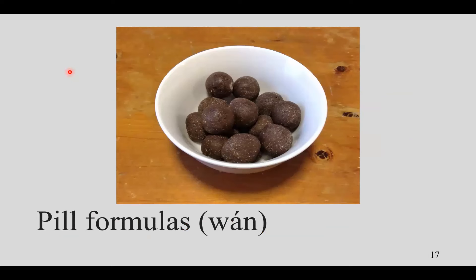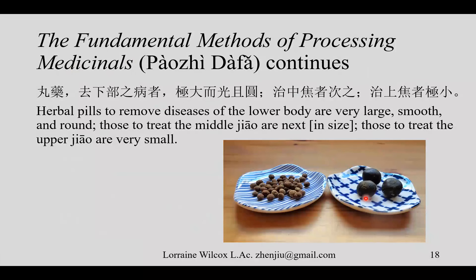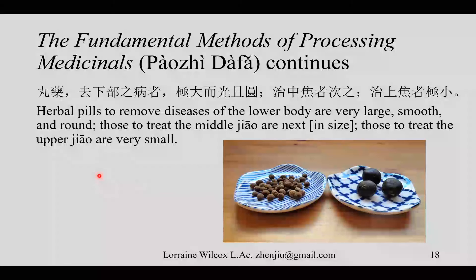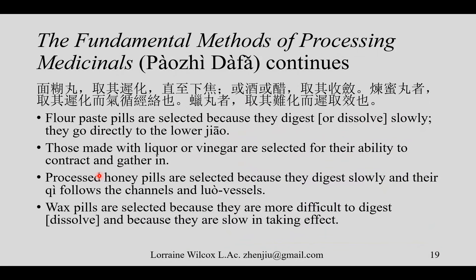Now let's look at pills. I've experimented with making honey pills and water pills. Honey pills are big — too big to swallow but chewable — and they don't taste too bad. Water pills should be small enough to swallow. Powder Dafa continues: herbal pills to remove disease of the lower body are very large, smooth, and round; for the middle jiao they're next in size; for the upper jiao they should be very small. A big pill falls farther, going to the lower jiao; a medium pill reaches the middle; a small pill floats above — kind of like powders float up.